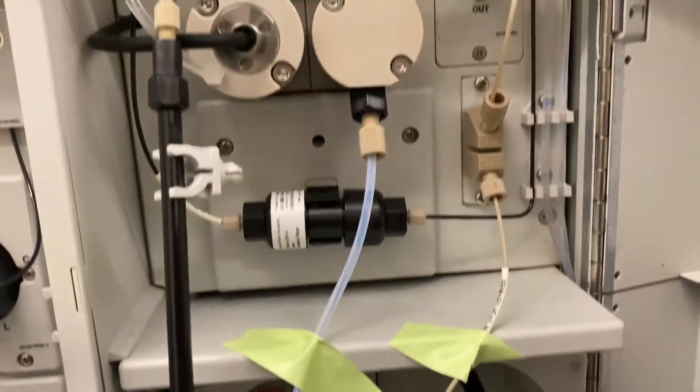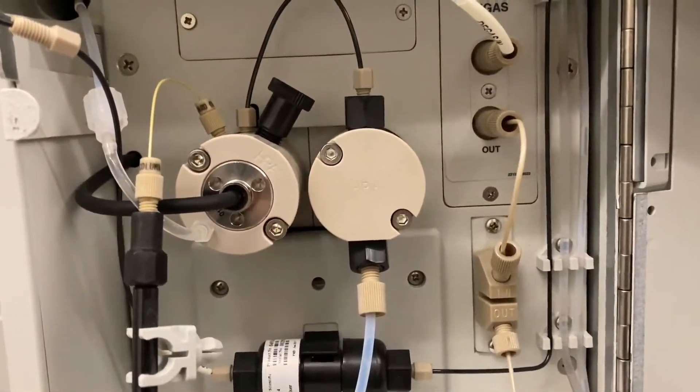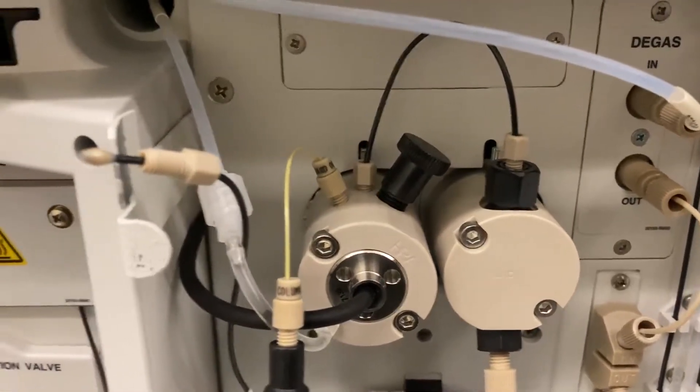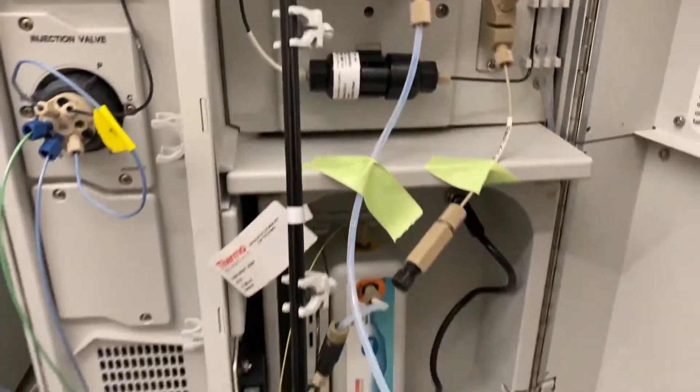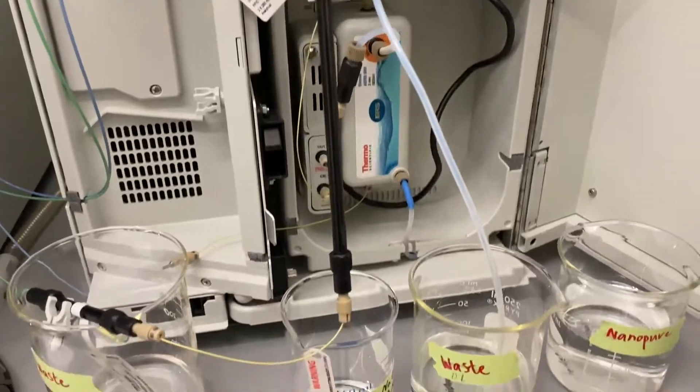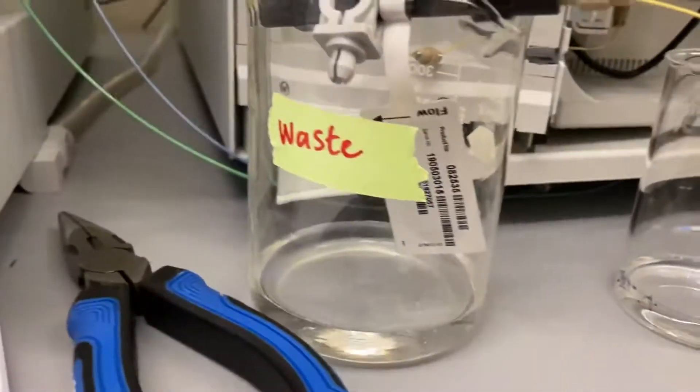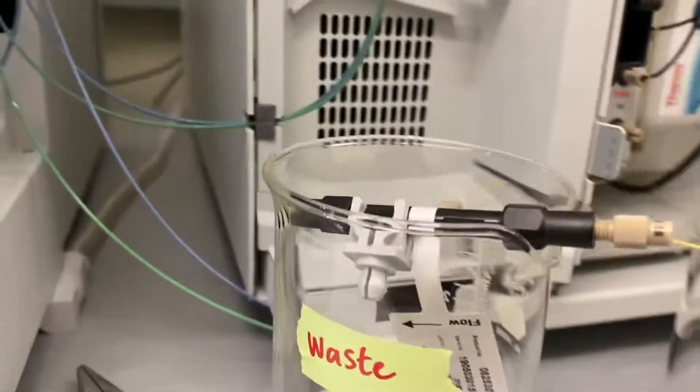So that pulls the DI up here into the valve or into the pump, and then it comes out of the pump over here through the analytical column. And then that's daisy-chained to the guard column. We've respected the flow direction on both of those.